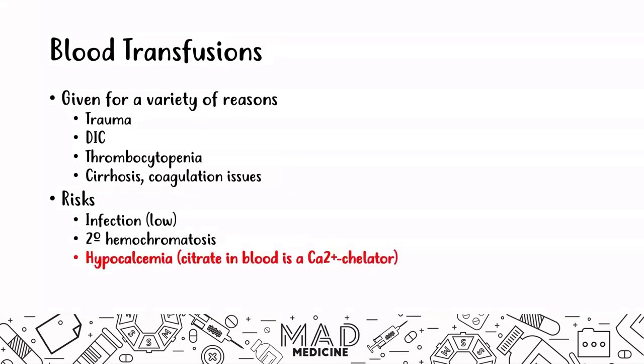You can also have hypocalcemia because there is citrate in the blood, and citrate is a calcium chelator. This is very important because it's often overlooked with blood transfusions. You can also have hyperkalemia: in old blood units, red blood cells can lyse, and this lysing leads to potassium being present in the extracellular space. Therefore, patients given blood transfusions can present with hyperkalemia when old units are transfused.